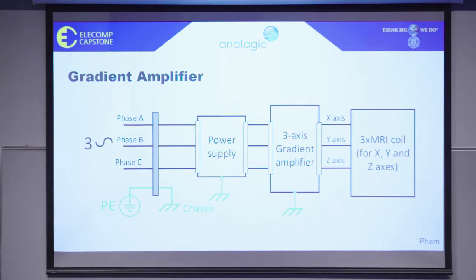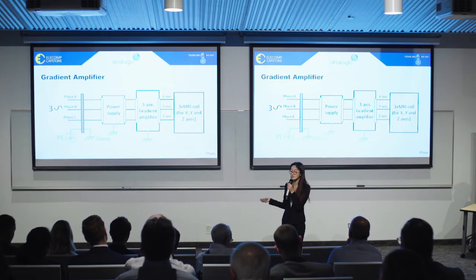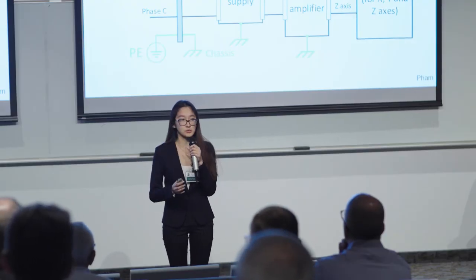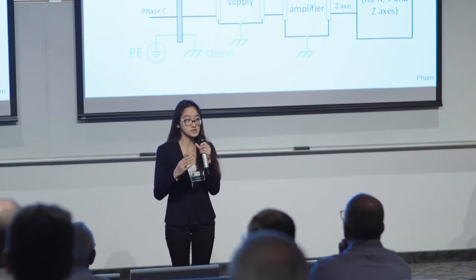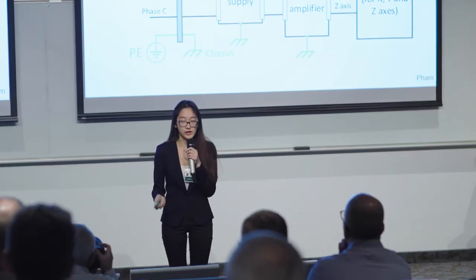In order to operate an MRI, users will specify a control waveform, and the gradient amplifier will work to provide both the power and signal amplification necessary to generate those magnetic fields. Now, under certain conditions, this input waveform can cause a gradient amplifier to exceed its operable levels, leading to system failure.